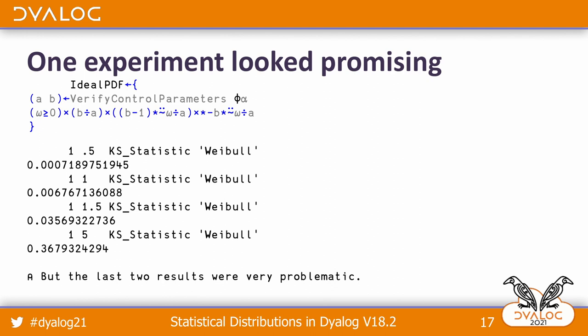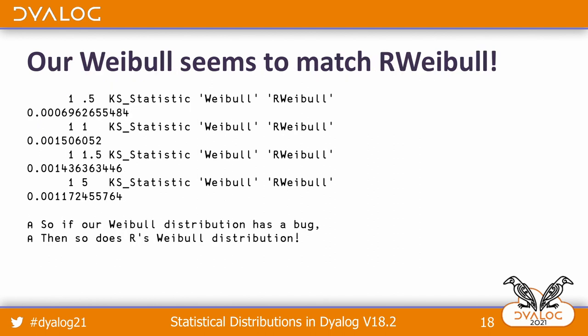These are almost certainly not the same distributions. So we still have a question that's open and we need to worry about answering it. When we compare the distributions we get and the ones we get from R for all these different parameters, they're in very close agreement. So I have to assume that if we have a bug, then R also has a bug, and it appears to be the same bug. I don't really have a good read on what the actual ideal should be, so I'll just leave that as an unsolved problem.